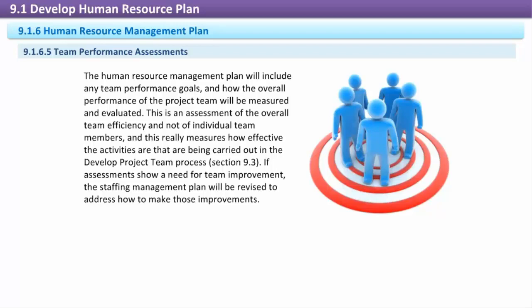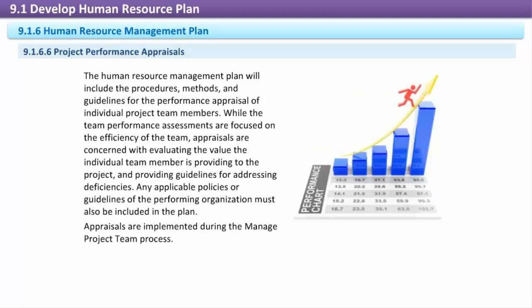Project Performance Appraisals: The Human Resource Management Plan will include the procedures, methods, and guidelines for the performance appraisal of individual project team members. While the team performance assessments are focused on the efficiency of a team, appraisals are concerned with evaluating the value the individual team member is providing to the project, and providing guidelines for addressing deficiencies. Any applicable policies or guidelines of the performing organization must also be included in the plan. Appraisals are implemented during the Manage Project Team process.